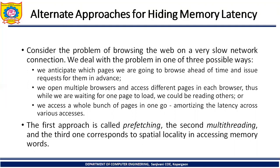Out of those three approaches, the first approach is called prefetching — we anticipate which page we are going to browse ahead of time and issue a request for them in advance. The second approach is called multithreading — we open multiple browsers and access different pages, so while waiting for one page to load, we could read others. The third approach corresponds to spatial locality in accessing memory words — we access a whole bunch of pages in one go, amortizing the latency across various accesses.